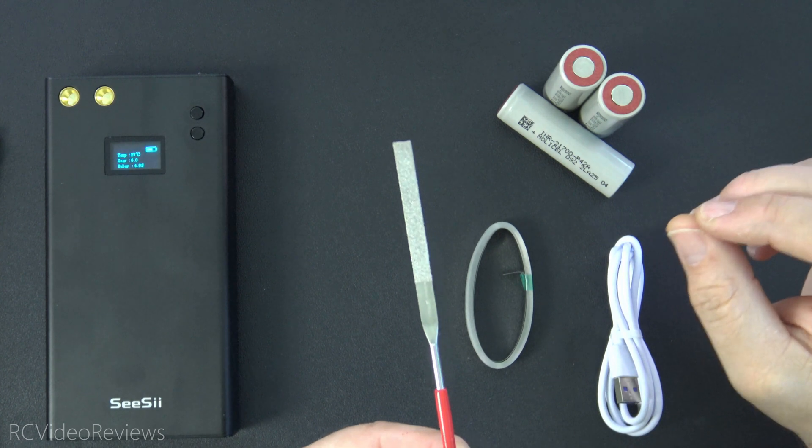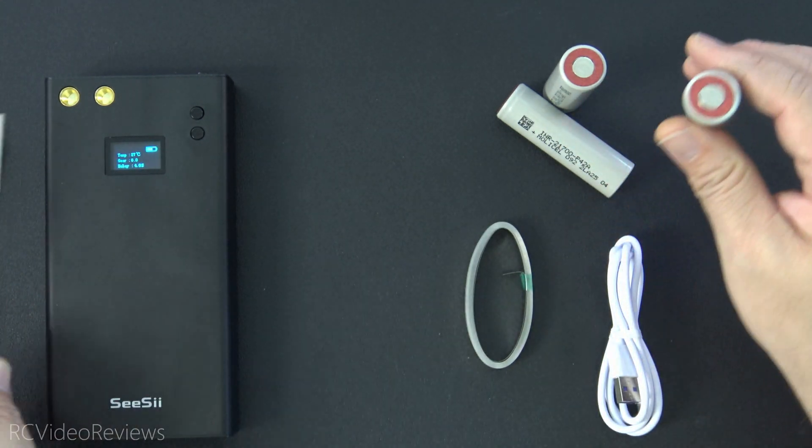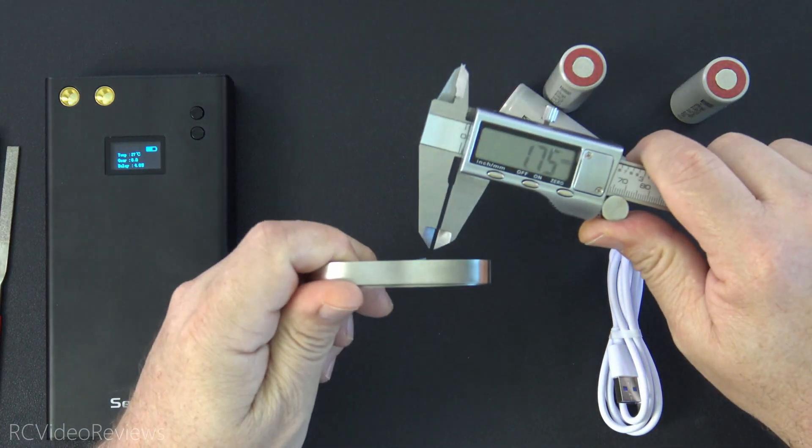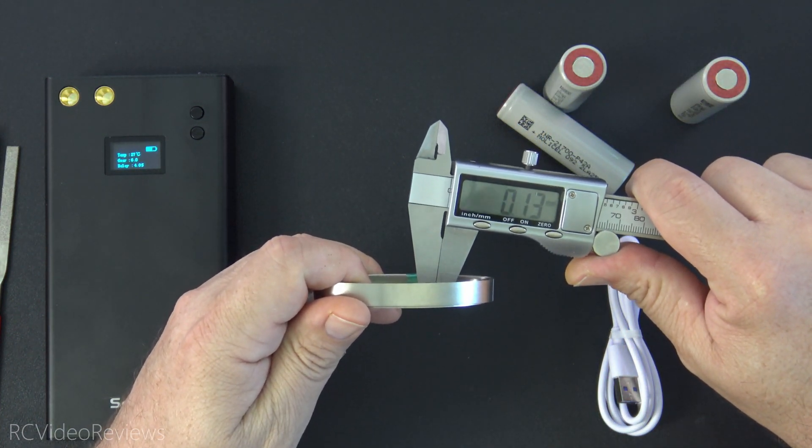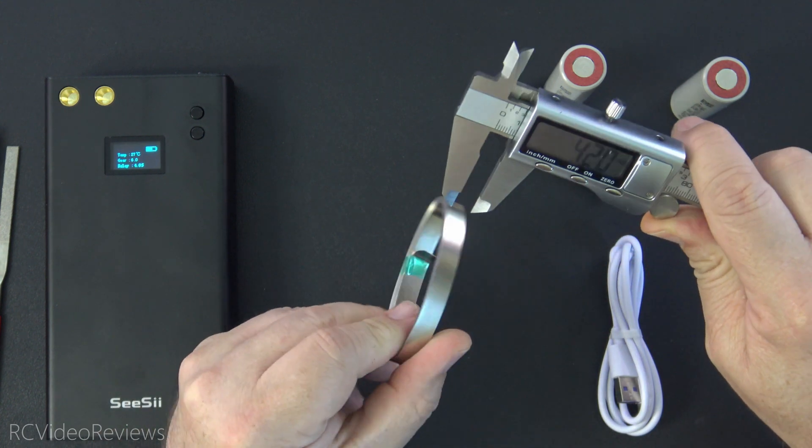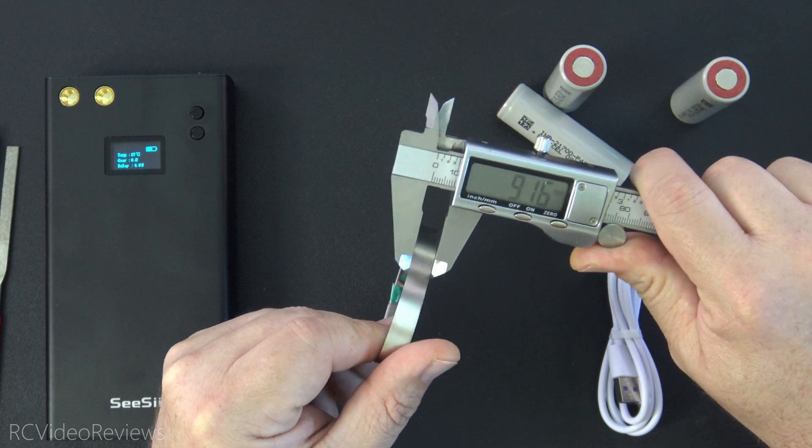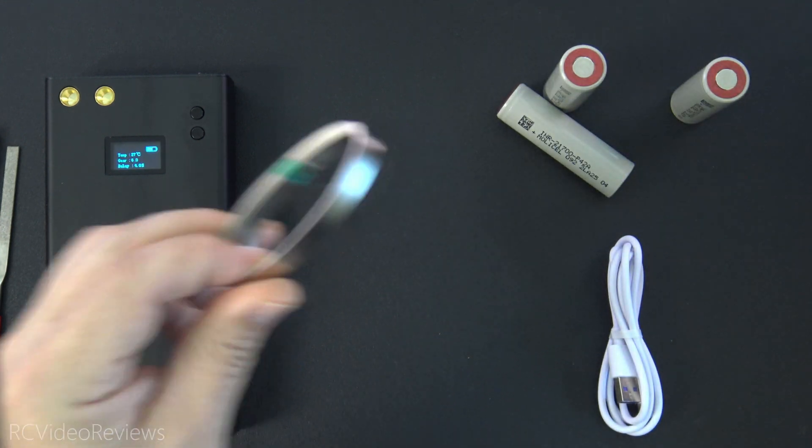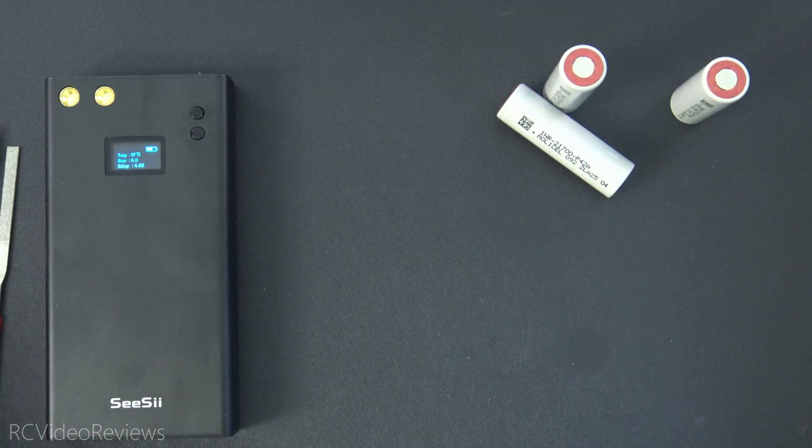They do give you a little metal file which is handy because before you do any spot welding you want to make sure you scuff up your surfaces a little bit. They also give you some nickel strip and on the micrometer it's measuring 0.15 on the thickness and about 9 millimeters on the width. They also provide a USB-C charging cable and that's it.